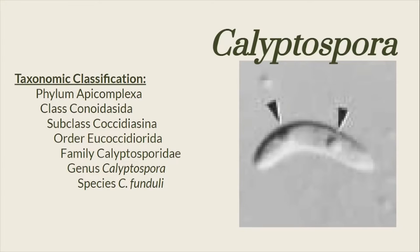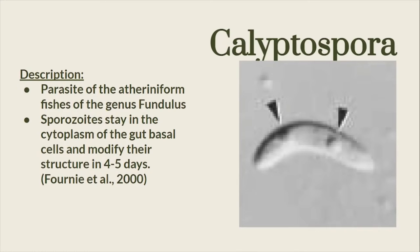The next species is Calyptospora fundula. This species is a parasite of fishes under the genus Fundulus. Its sporocytes stay in the cytoplasm of the gut basal cells and will modify their structure in 4 to 5 days. Before these days, this is not infectious to the fish host.